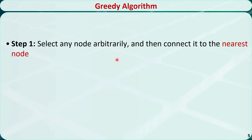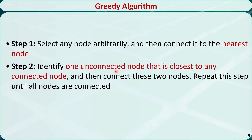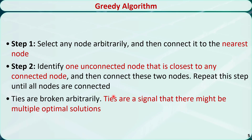We can use this greedy algorithm to find the minimum spanning tree. Step 1: select any node arbitrarily, and then connect it to the nearest node. Step 2: identify one unconnected node that is closest to any connected node, and then connect these two nodes. Repeat this step until all nodes are connected. Ties are broken arbitrarily — ties are a signal that there might be multiple minimum spanning trees.